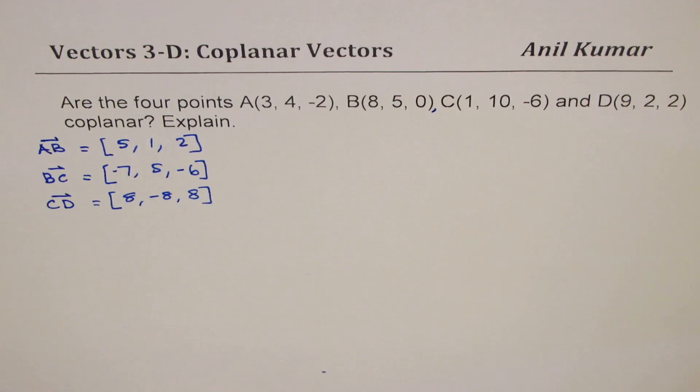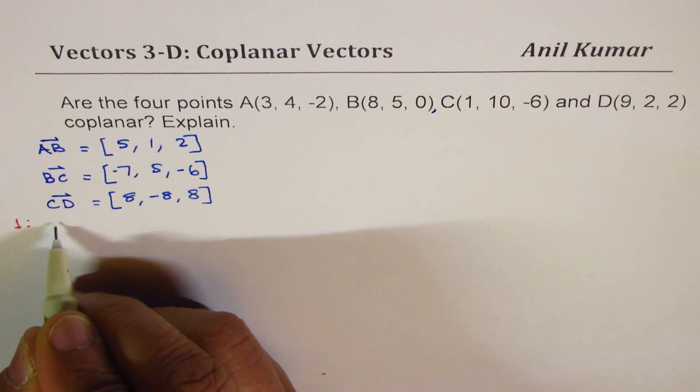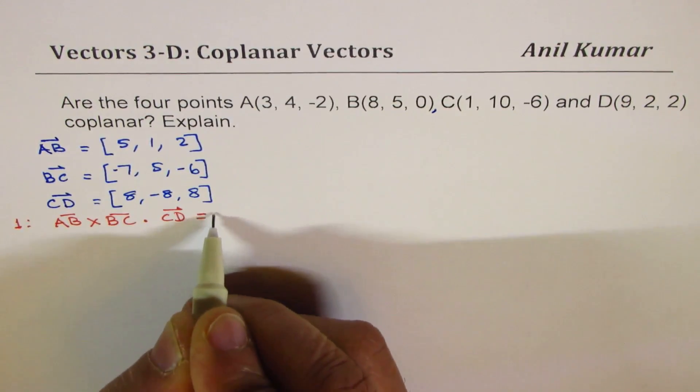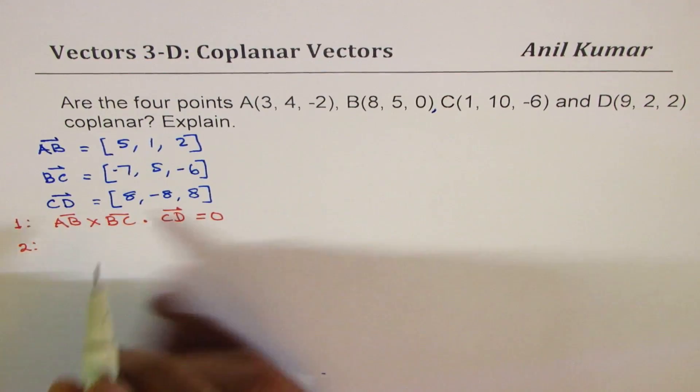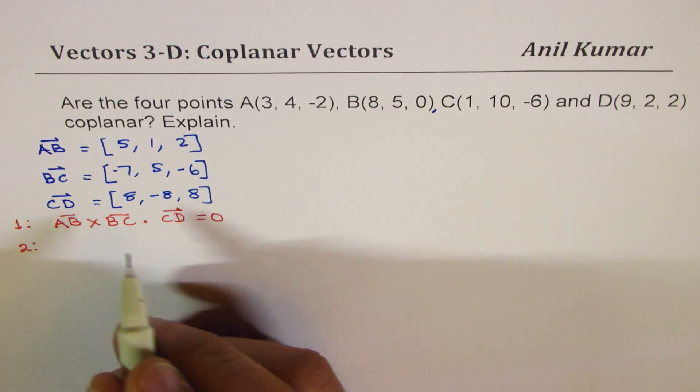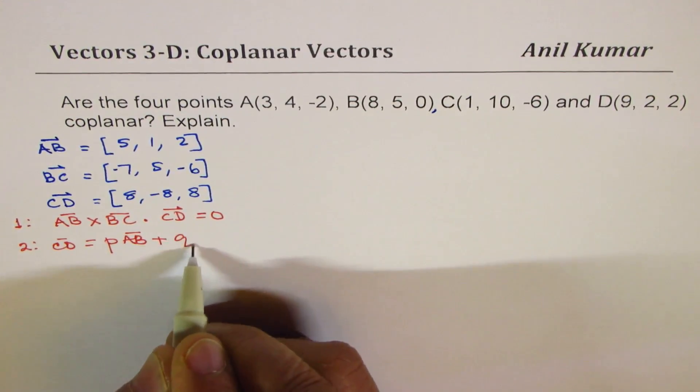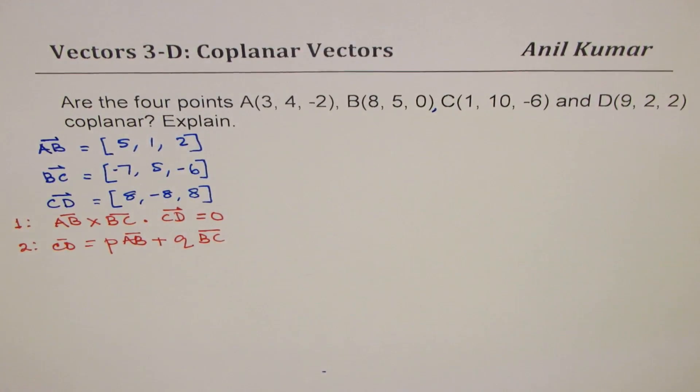Now to show that they are coplanar, we have two strategies. One is to do scalar triple product: AB cross BC dot CD. If that equals 0, they are coplanar. The second strategy could be that we write one vector as a combination of other two, so CD equals P times AB plus Q times BC. So these are the two strategies for coplanar.